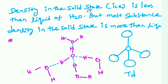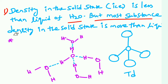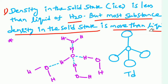One more important thing about water and hydrogen bonds. The density of solid state ice is less than the liquid state of H₂O. But for most substances, the density in the solid state is more than in the liquid state. In this case, what is the reason that ice density is less than liquid water? The reason is hydrogen bonds.